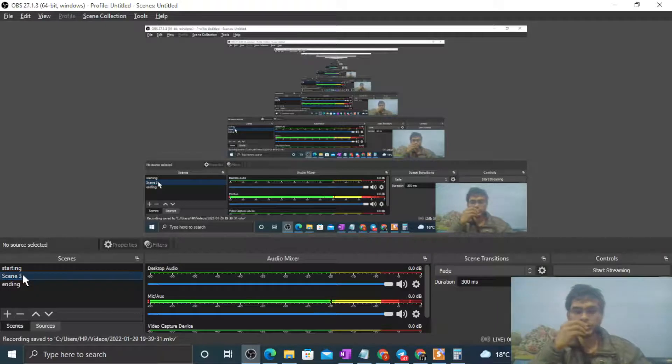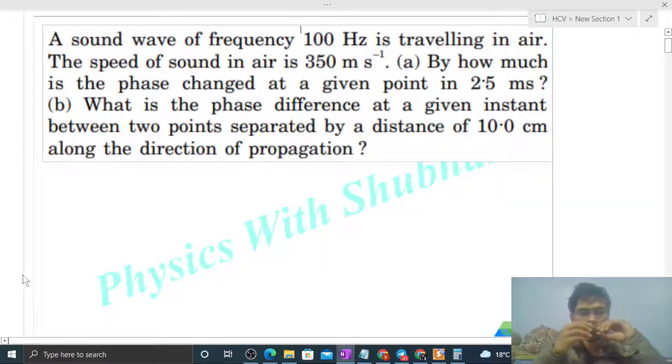Okay, hi everyone. Today let's discuss one interesting problem. It says a sound wave of frequency 100 Hz is traveling in air. The speed of sound in air is 350 meters per second. By how much is the phase changed at a given point in 2.5 milliseconds?